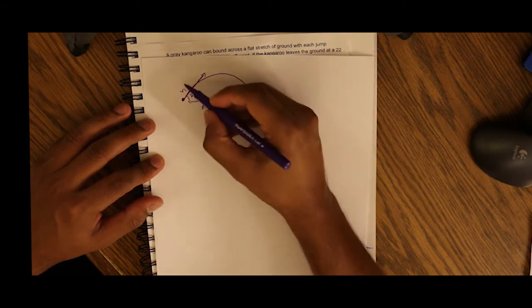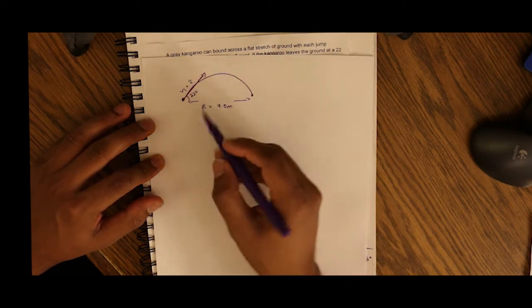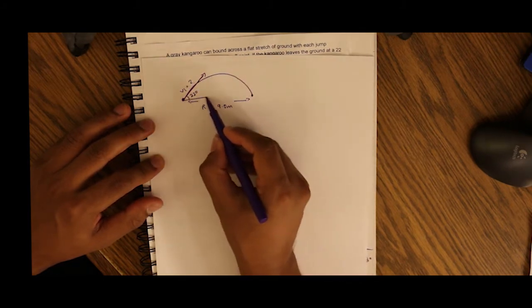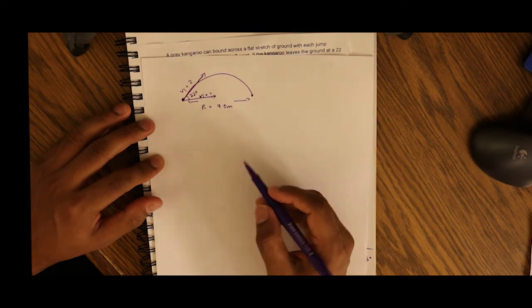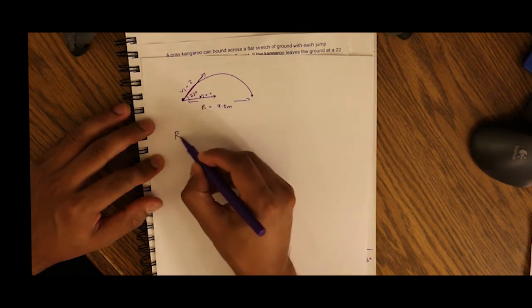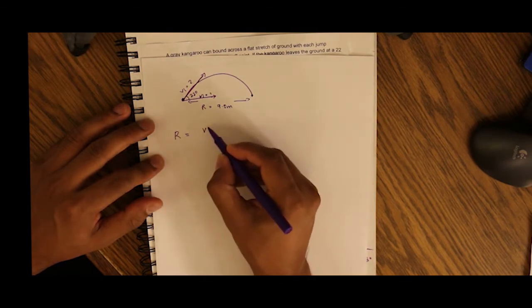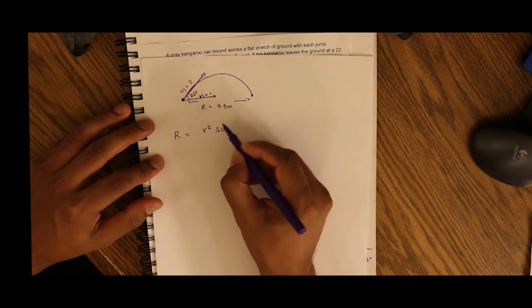We are asked to find out what this is and we are asked to also find out the vector of velocity in the horizontal plane. So we have a formula for the range which is range equals velocity squared times sine of 2 theta over g.